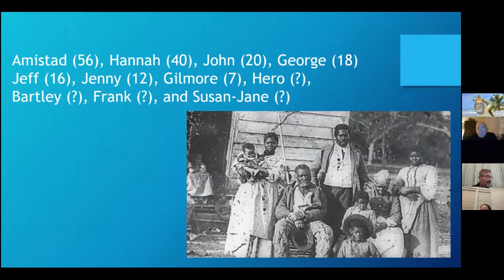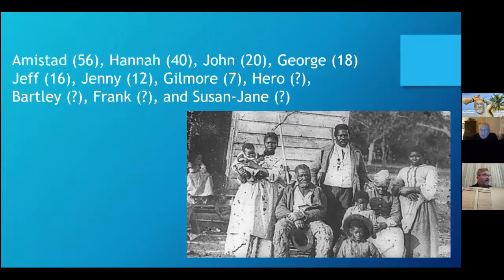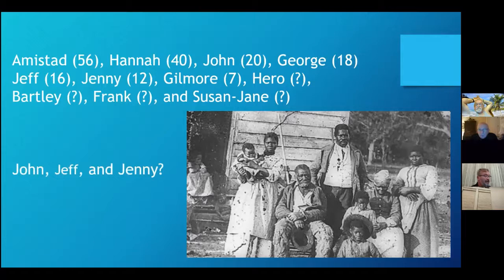Halliburton determined that Thomas Kent and Francis Carter were indeed alien enemies living in Ohio and that the said enslaved persons should rightfully be sequestered and delivered up to Francis Smith, receiver for District No. 1. On November 18, 1863, Smith reported to Halliburton on the dispensation of most of the slaves. After giving notice by advertisement in the Richmond Dispatch, the receiver had Amistad, Hannah, and their children Hero, Bartley, Frank, Gilmore, Susan Jane, and George sold at public auction for a total of $16,555. Three other bondspeople from Smith's original petition — John, Jeff, and Jenny, all among the most valuable of the lots — were not part of the transaction. The court record is silent about their fates, leaving one to wonder if Halliburton and Smith somehow profited by clandestinely selling them.